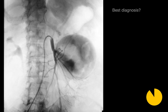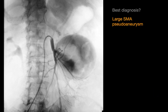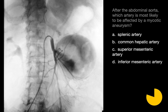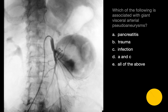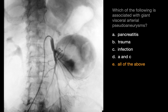The best diagnosis here is a large SMA pseudoaneurysm. After the abdominal aorta, the artery most likely to be affected by a mycotic aneurysm is the superior mesenteric artery. Any of the following conditions can be associated with giant visceral arterial pseudoaneurysms: pancreatitis, trauma, and infection.